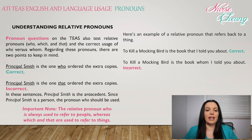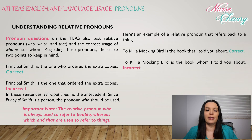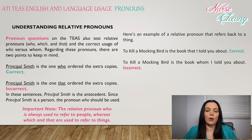Pronoun questions on the test also cover relative pronouns — who, which, and that — and the correct usage of 'who' versus 'whom.' Regarding these pronouns, there are two points to keep in mind. 'Principal Smith is the one who ordered the extra copies' is correct. 'Principal Smith is the one that ordered the extra copies' is incorrect. Since Principal Smith is a person, the pronoun 'who' is used. The relative pronoun 'who' is always used to refer to people, whereas 'which' and 'that' are always used to refer to things.